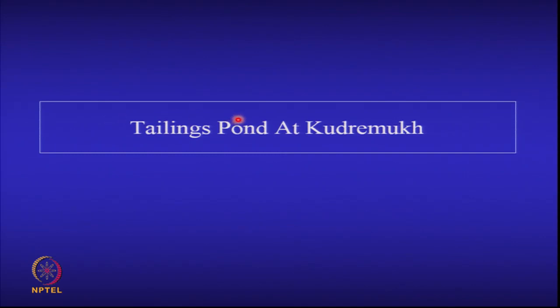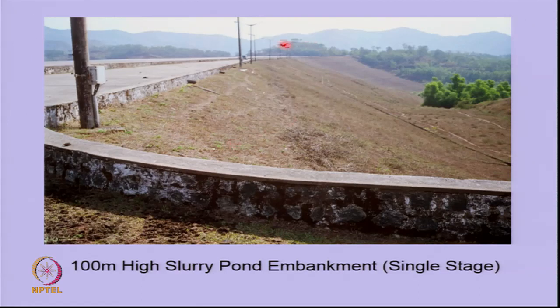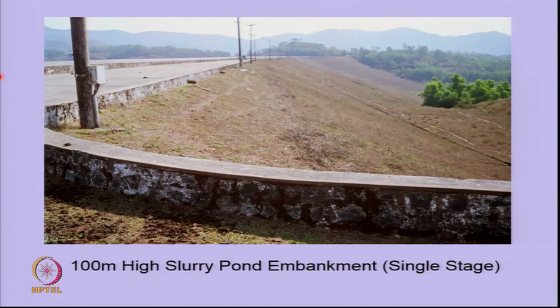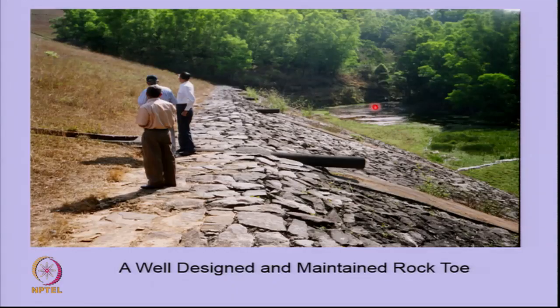This is the highest tailings pond in the country — now no longer operational — a 100-meter-high dam holding iron tailings in slurry form. Wherever you have a hilly area, you can make an embankment on one side, but on plain ground you must make the embankment on all four sides. An important feature is the rock toe — the dam is about 80 to 100 meters high and the rock toe is 10 meters high. Since slurries are full of water, you must design these dams as water reservoirs, accounting for seepage through to the downstream portion.